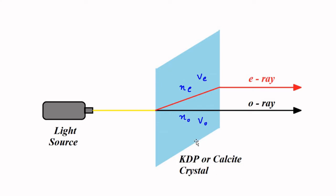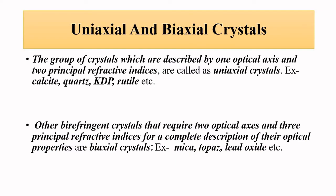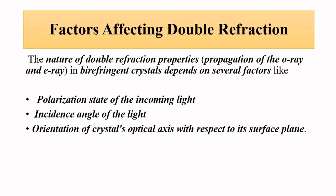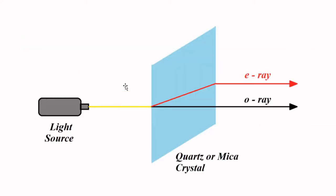KDP (potassium dihydrogen phosphate) or calcite is a uniaxial crystal — it has one optic axis and two principal refractive indices: η₀ and ηₑ for the ordinary and extraordinary rays. Biaxial crystals require two optical axes and three principal refractive indices for a complete description. Here we are only interested in uniaxial crystals. The phenomenon of double refraction depends on certain factors — first, whether the incoming light is polarized or unpolarized.